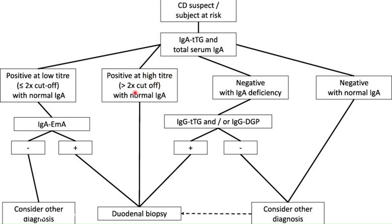In the second scenario, where the IgA TTG level is positive and higher than two times the cutoff value with normal IgA level, then consider duodenal biopsy directly.